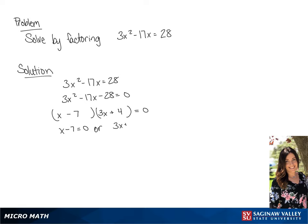Now we're going to set each binomial to 0. So we have x minus 7 equals 0 or 3x plus 4 equals 0. So our answer is going to be x equals 7 or x equals negative 4 over 3.